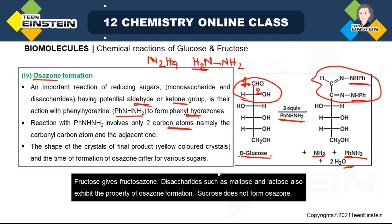Disaccharides such as maltose and lactose also exhibit osazone formation. However, sucrose does not give osazone. Remember, this reaction is only for reducing sugars. Sucrose is non-reducing, so it will not give an osazone. This is osazone formation — the product is called osazone.